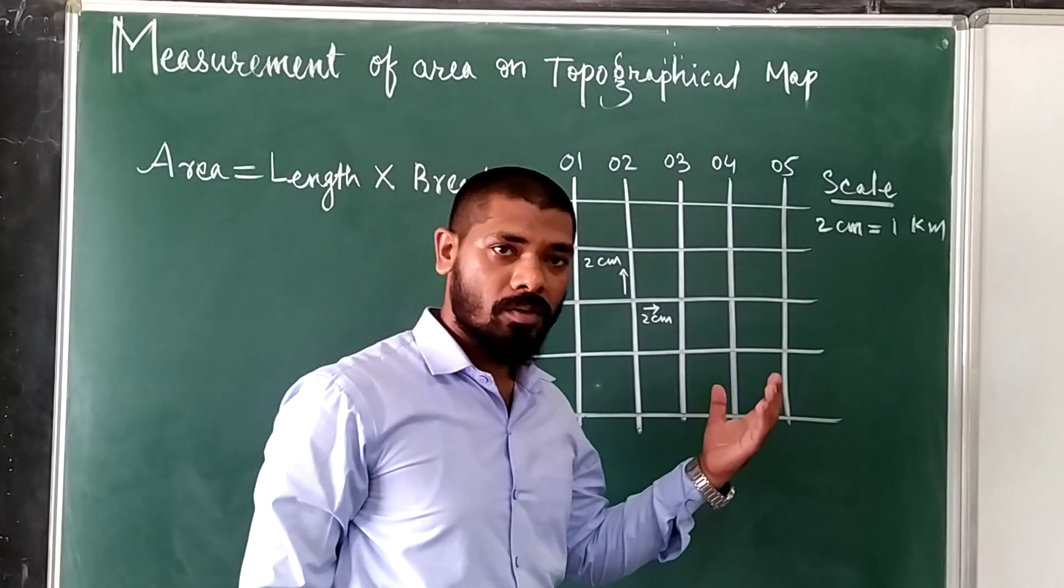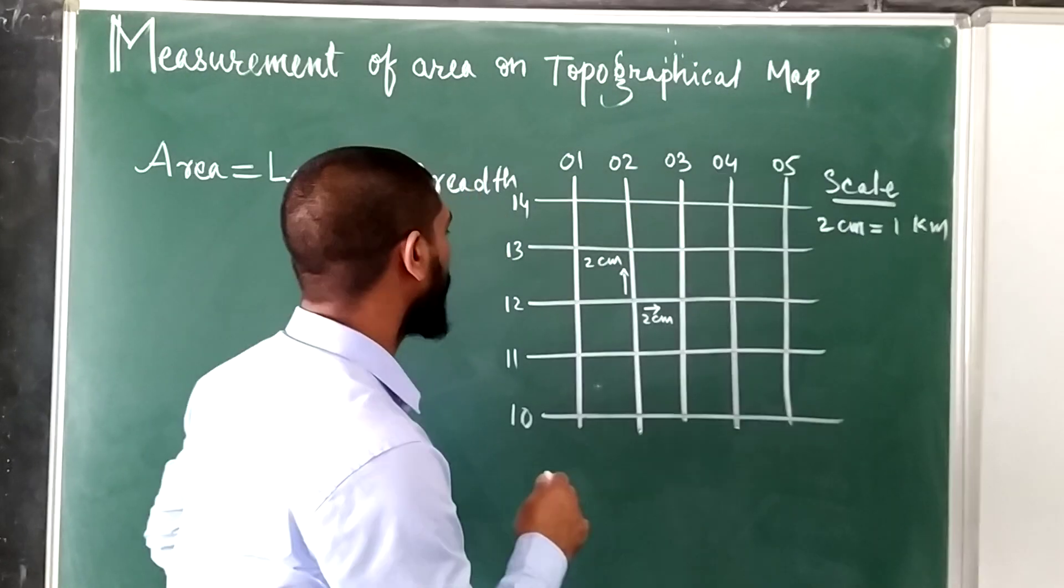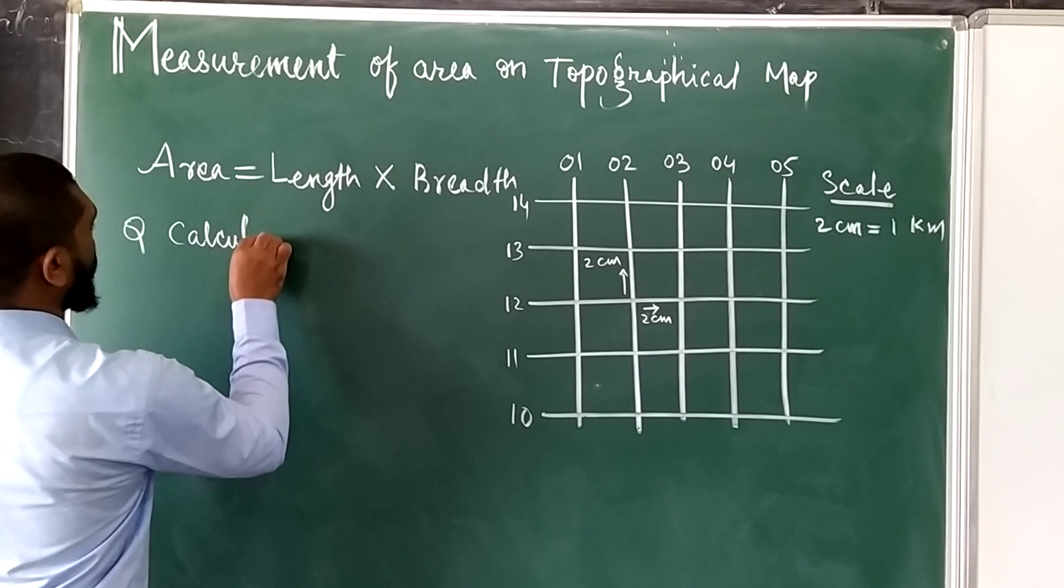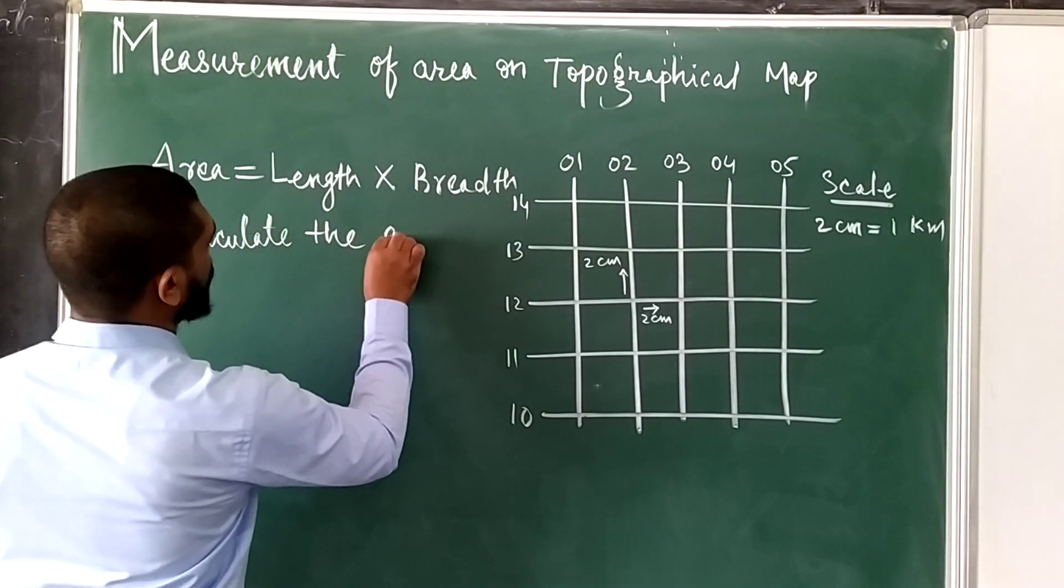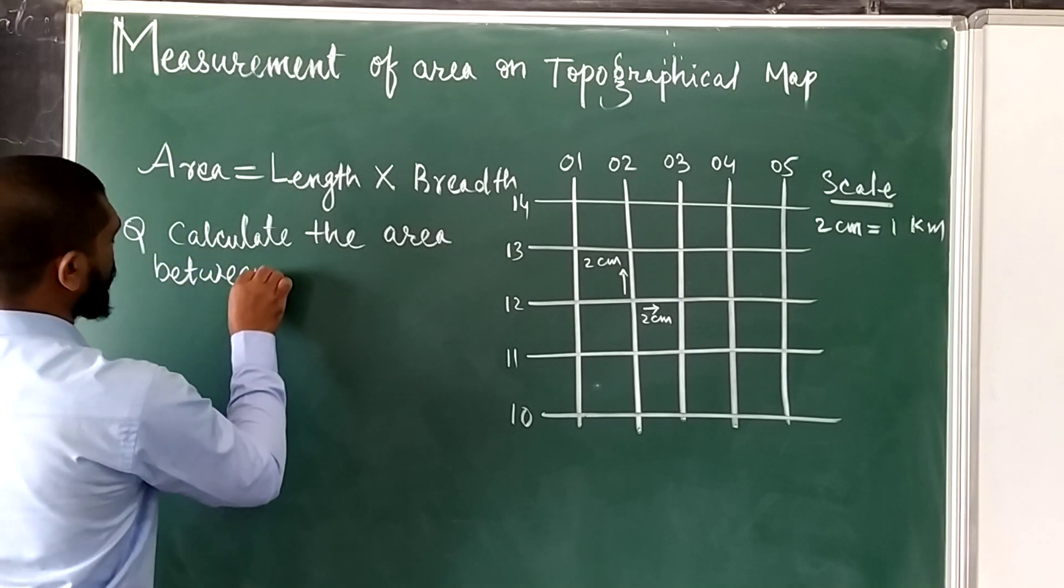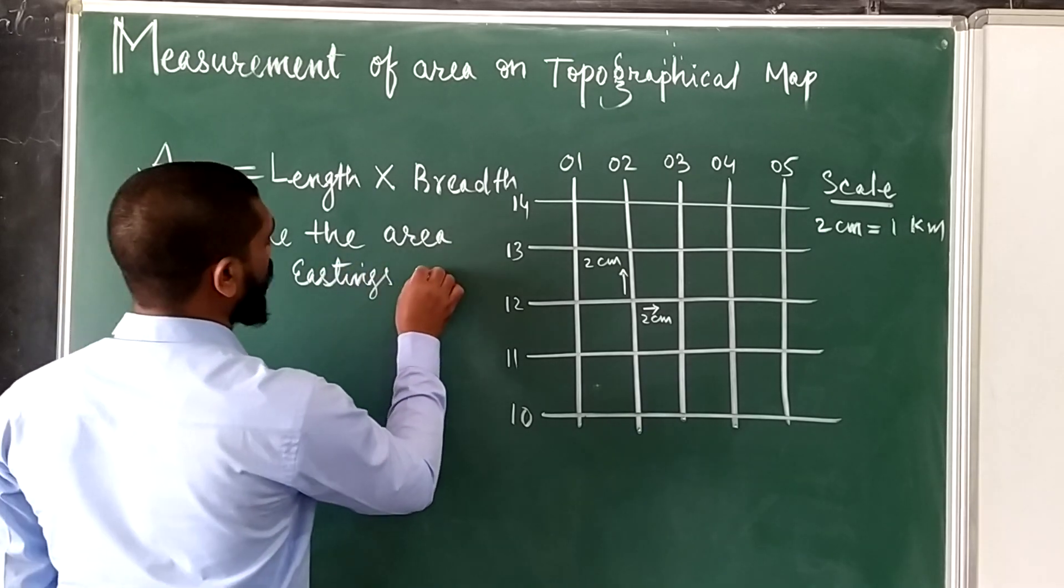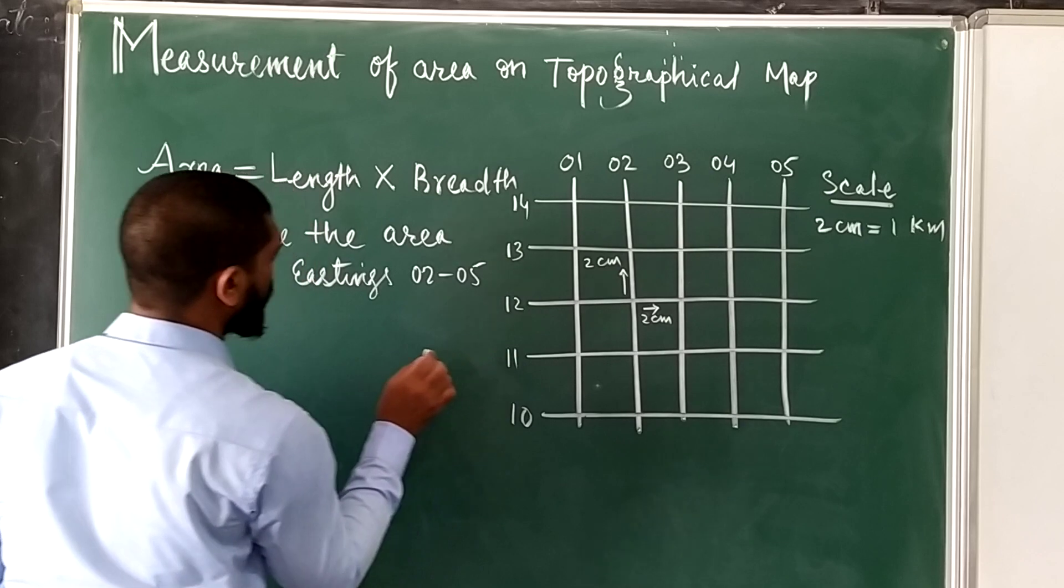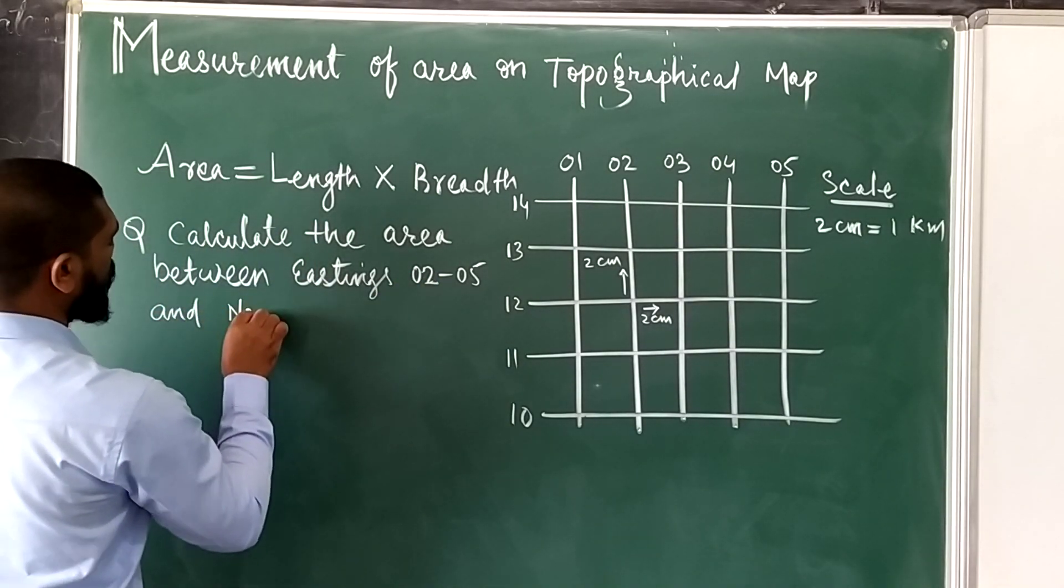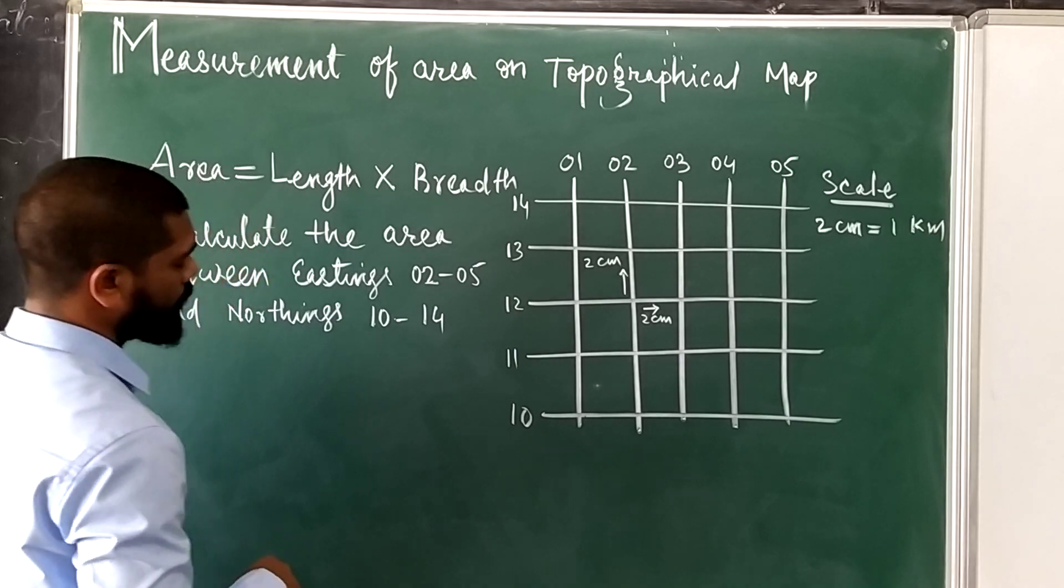Let's take one example to understand in a better way how to find out the area. Calculate the area between Eastings 02 to 05 and Northings 10 to 14.